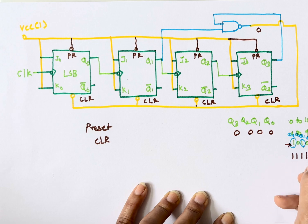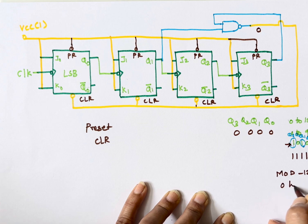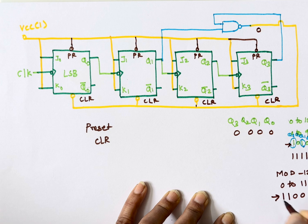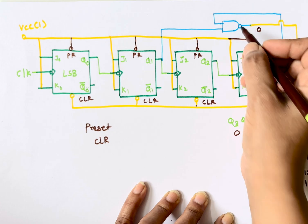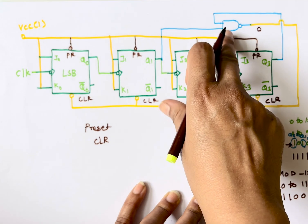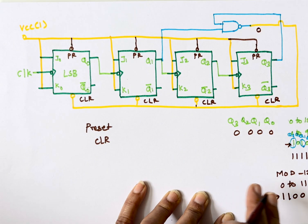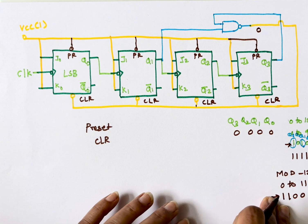In this way we can design a Mod N counter. Here our value was Mod 10, so we used 1 0 1 0. In the case of Mod 12, the binary equivalent of 12 means we connect Q3 and Q2 to the NAND gate inputs (the bits that are 1). The outputs which are 1 go to the input of the NAND gate. This is how you design it.